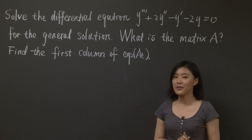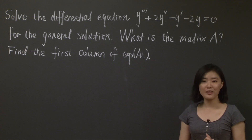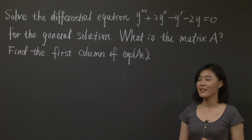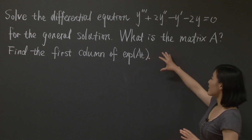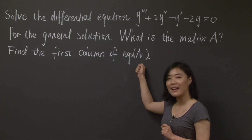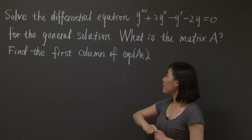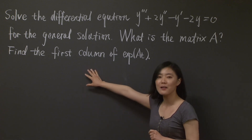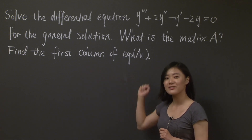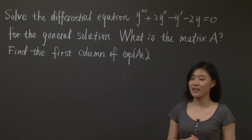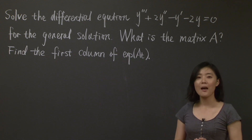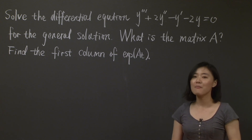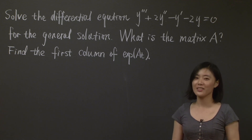The very first thing we should do is to find out which matrix we should be working with. After that, we also want to say something about the exponential of this matrix A times t — specifically, we want to find out the first column of this matrix exponential. Why don't you hit pause now and try to write down this matrix A by yourself, then come back to check with me that you've got the correct A.